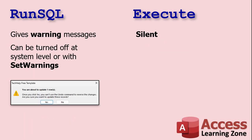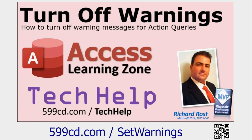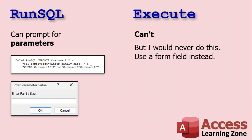RunSQL is better for beginner developers because it gives you warning messages — like 'You're about to update one row, click Yes to continue.' You can turn these messages off at the system level under Access Options, or with the SetWarnings command. Execute is completely silent — no pop-ups or dialog boxes. If you want to learn how to turn off those warnings for RunSQL, I have a video for you — find the link in the links section below.